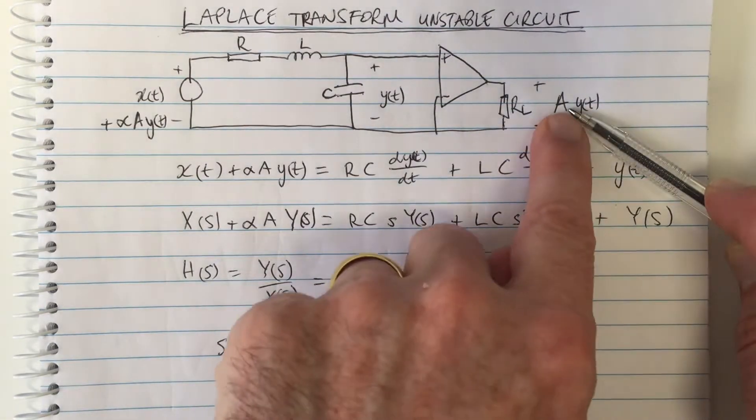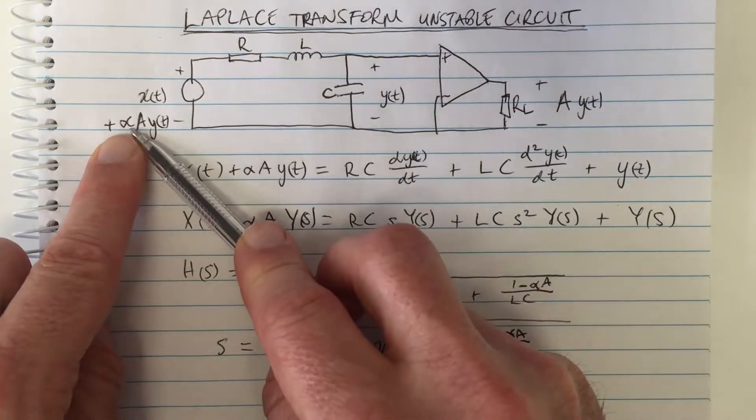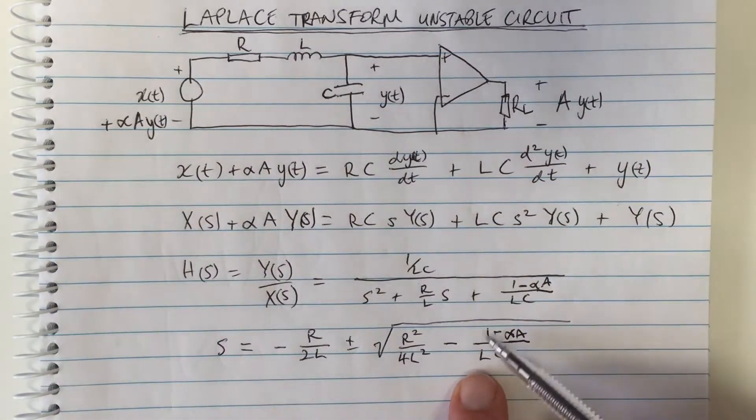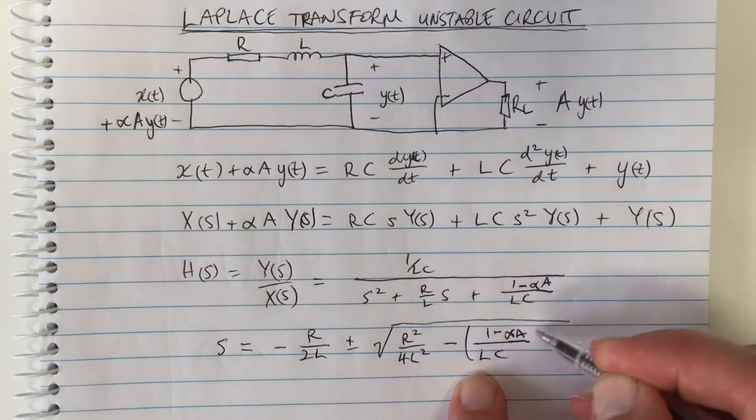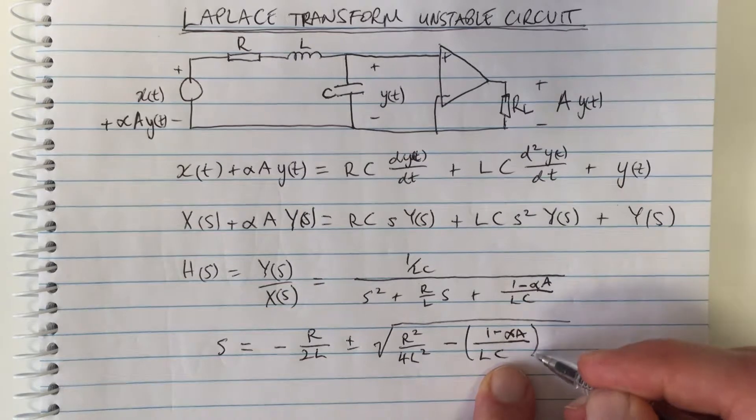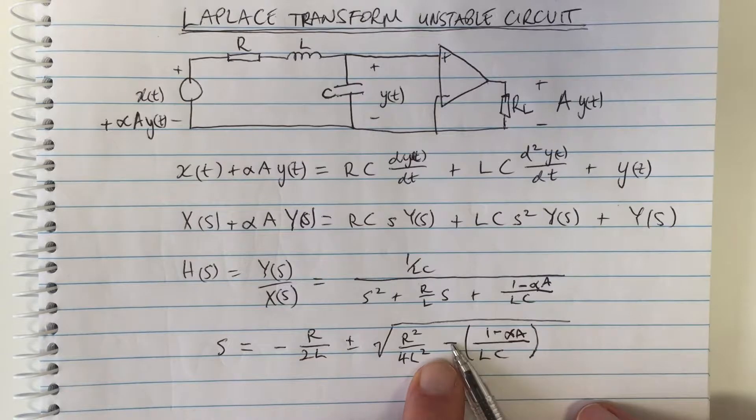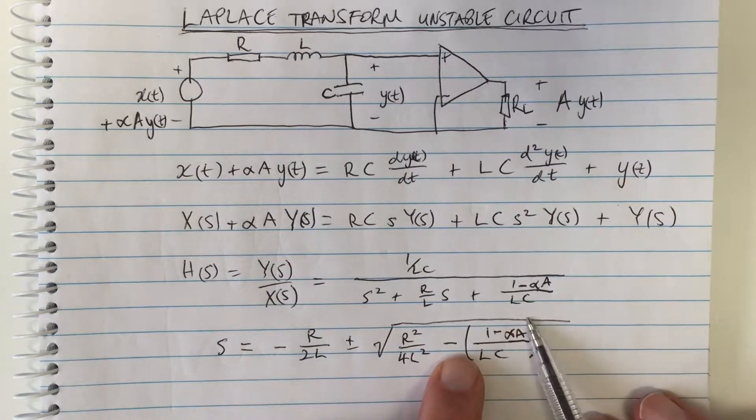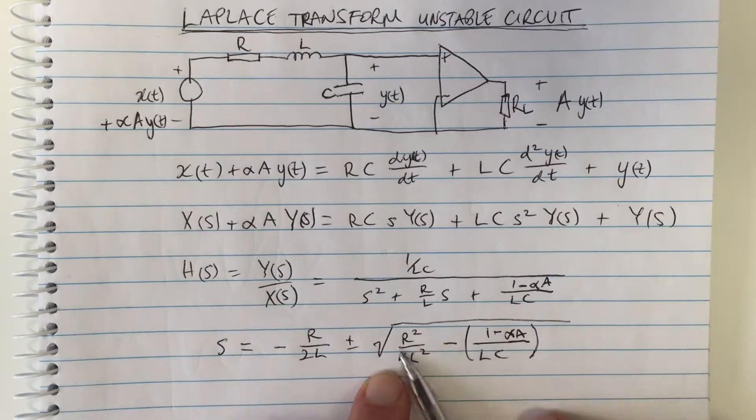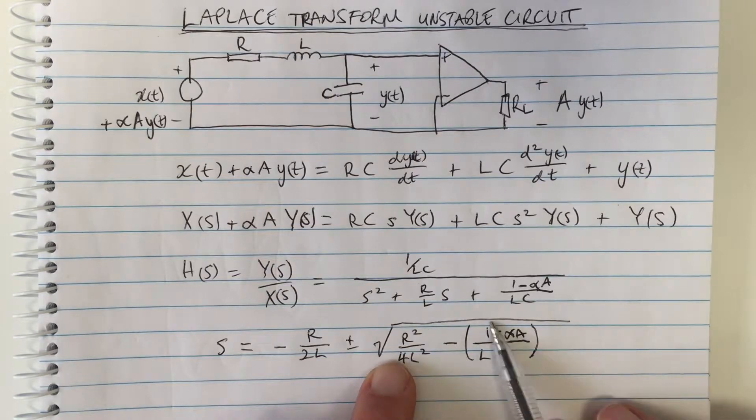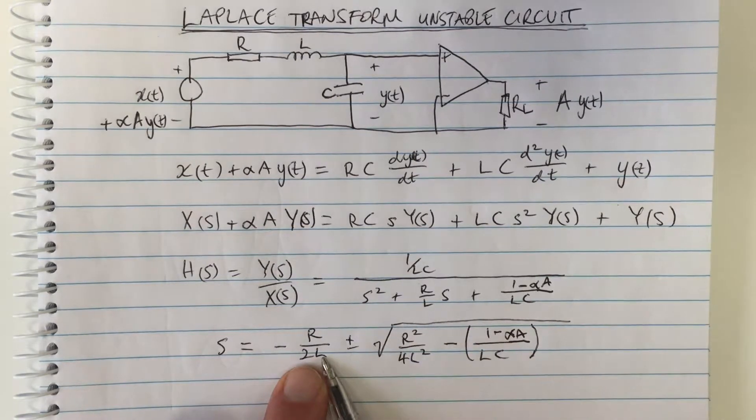Now that we have this feedback with an amplification of A and a feedback leakage of alpha, this term here now is not necessarily going to be positive. If alpha times A was bigger than one, then this number here in the brackets would be a negative number, which means with that negative there it would be a positive number. So we're adding to this value here.